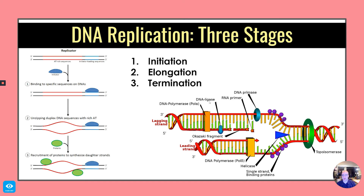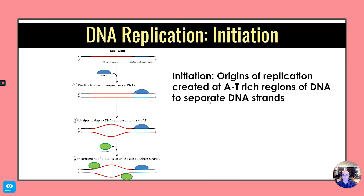And we have our schematic here. For initiation, origins of replication are created at AT-rich regions of the DNA. This is when the DNA strands start to separate from each other as we prepare.